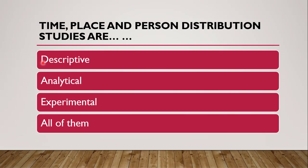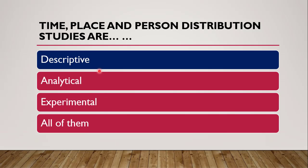The next question: Time, place, and person distribution studies are — descriptive, analytical, experimental, or all of them? The correct answer is descriptive studies, which involve time distribution, place distribution, and person distribution.